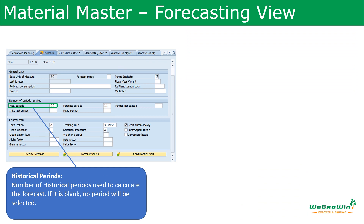The selections include what are the historical details, forecast period, etc. Starting with the historical periods — the number of historical periods we need to have to calculate the forecast. If we keep this field blank, the system will not take any periods.